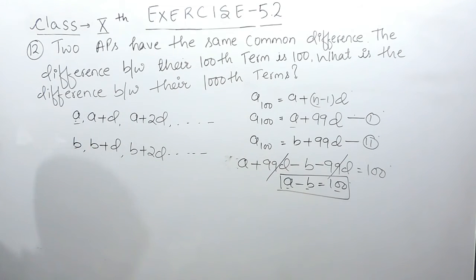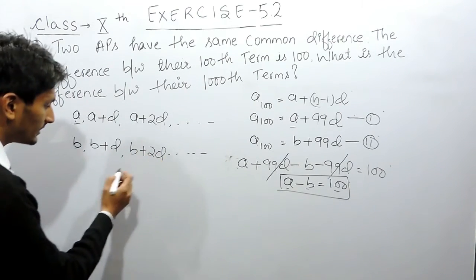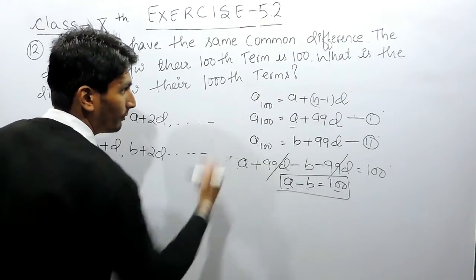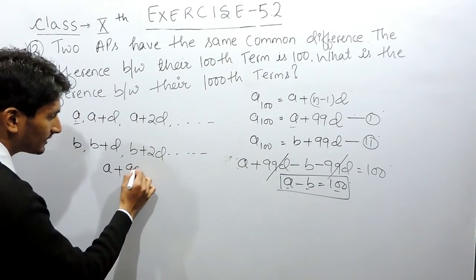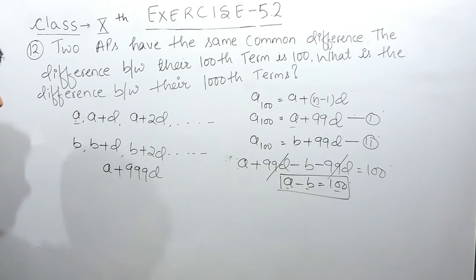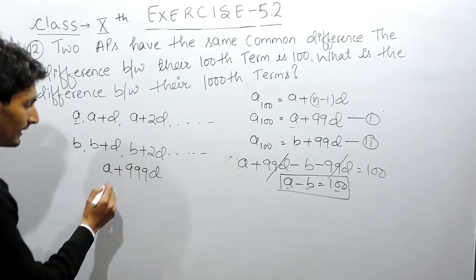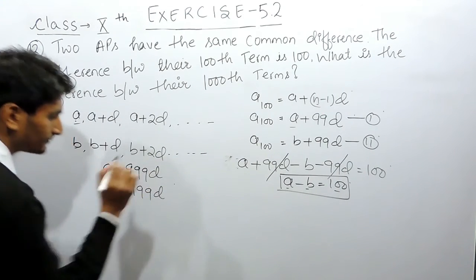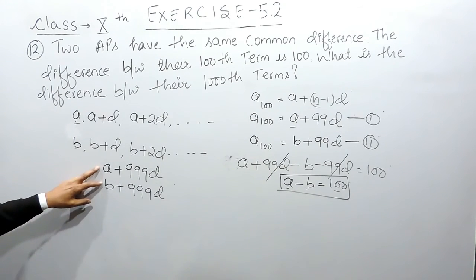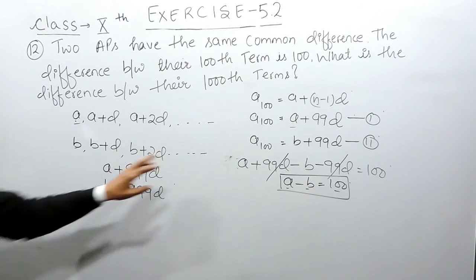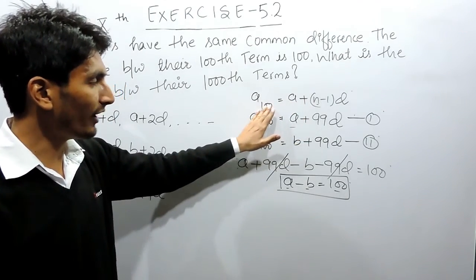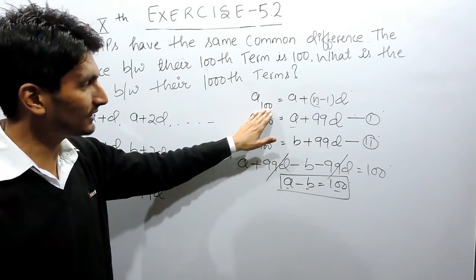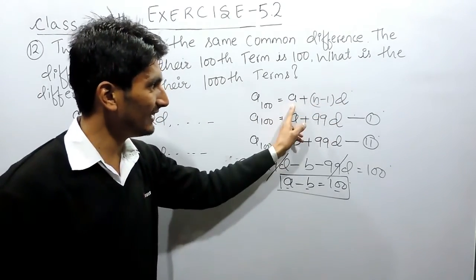A and B are the first terms of the two APs. Now we need to find the difference between their thousandth terms. Using the same formula, the thousandth term of the first AP is A plus 999D, and the thousandth term of the second AP is B plus 999D.